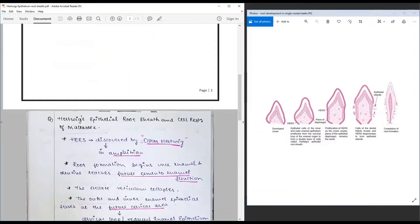First, it was discovered by Oscar Hertwig in amphibians and later identified in mammalians and all living organisms that have the tooth as we know it today.